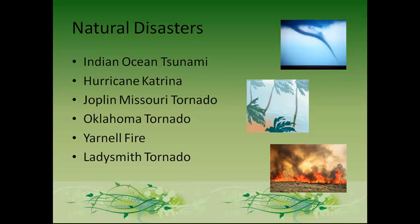The deadliest single tornado in nearly 60 years hit Joplin, Missouri on Sunday, May 22, 2011. Thirty percent of Joplin was flattened. The EF-5 tornado — the highest rating based on inflicted damage by the National Weather Service — was labeled the deadliest single tornado since 1950. It carved a path of destruction a mile wide and 22 miles long, affecting over 8,000 structures including homes, churches, schools, and businesses. The death toll was 124 people with several others injured.